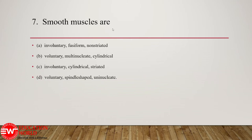Question number 7: smooth muscles — we know that muscles are of three different types: skeletal muscles, smooth muscles, and cardiac muscles. Smooth muscles are usually spindle-shaped or fusiform in outline, involuntary in nature, and they do not have the pattern of bands and interbands — that is, they are non-striated. Hence the correct option among the four options A, B, C, D is option A: smooth muscle fibers are involuntary, fusiform, and non-striated.